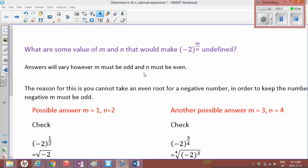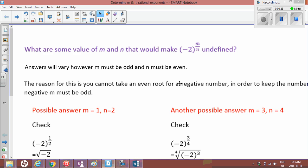Answers will vary, however m must be odd and n must be even. So the top number m must be odd and n must be even. The reason for this is you cannot take a root of a negative number.